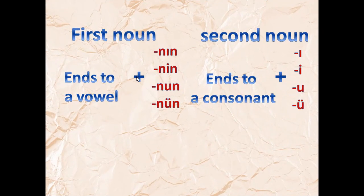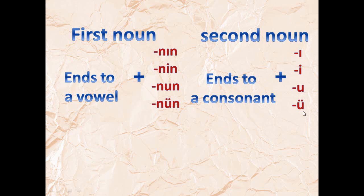Now, if the first noun ends in a vowel, we will have the suffix 'nin', 'nun', or 'nün'. And as we had before, if the second noun ends in a consonant, we will have these four suffixes: 'ı', 'i', 'u', or 'ü'.